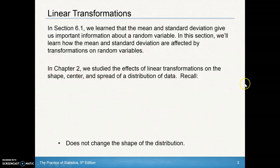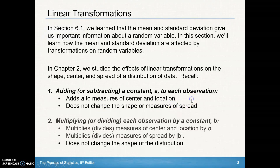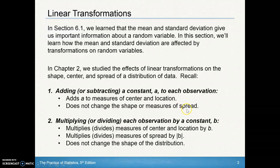In Chapter 2, we studied the effects of linear transformations on the shape, center, and spread of a distribution. Recall that if we add or subtract a constant to each observation, it does not change the shape or the measures of spread, but it does add that constant to measures of center or location. For example, if we add 5 to every data point, we add 5 to the measure of center, but the shape and spread do not change.